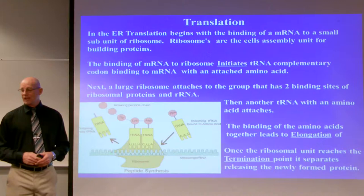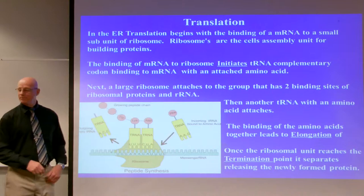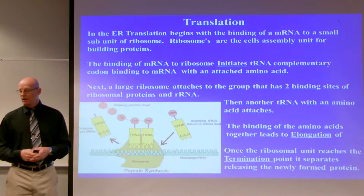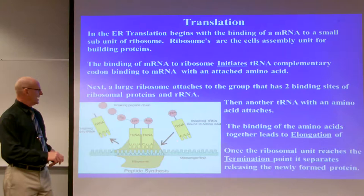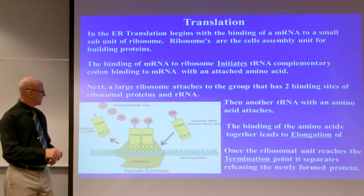In the ER, translation begins with the binding of that messenger RNA to a small subunit of a ribosome. There are three processes in translation: initiation, elongation, and termination. The binding of that messenger RNA to the ribosome will initiate a transfer RNA to come down to its initiation point. Transfer RNA has three nucleotide bases called a codon, and it will have an amino acid attached to it.